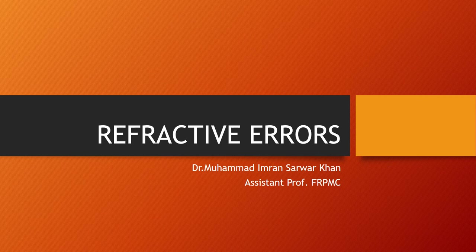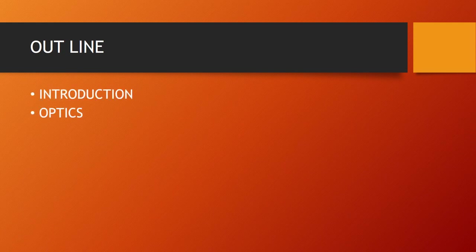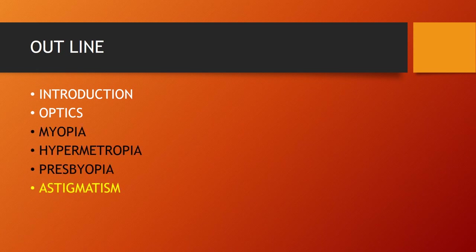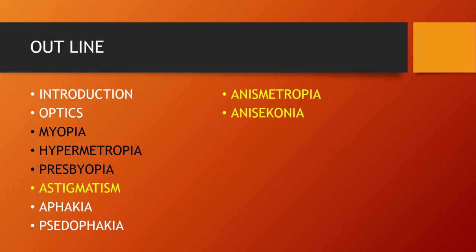Today we are going to discuss refractive errors. The outline covers introductions and optics as a recall, then the different refractive errors: myopia, hypermetropia, presbyopia, and astigmatism. All students must know these conditions. Aphakia and pseudophakia are also simple, easy-to-understand conditions. Anisometropia and anisokonia are slightly different concepts but students must know about these as well.